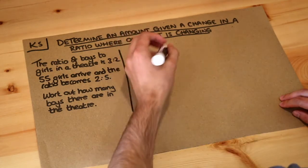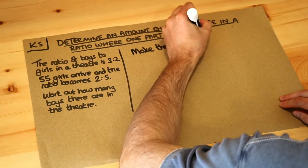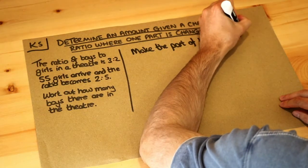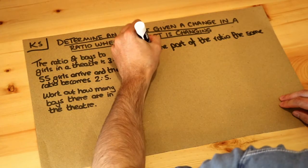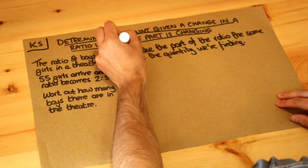Now there's a trick to doing this: make the part of the ratio the same for the quantity we're trying to find. In this particular case we're trying to work out how many boys there are in the theatre.